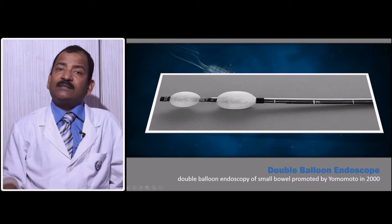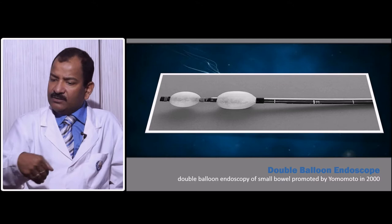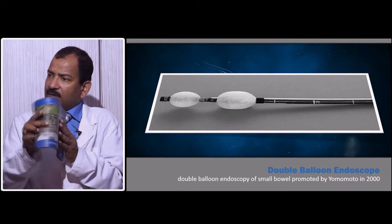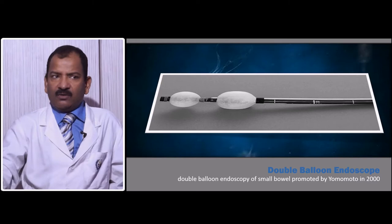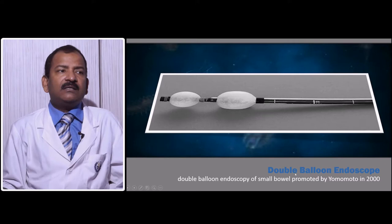Double balloon endoscopy is very good for seeing the terminal ileum, because in conventional endoscopy we can go only up to the second part of the duodenum. After the second part there is an acute bend, and if you try to push the endoscope there will be a looping effect — the loop is pushed but it will not go ahead. In those situations the double balloon endoscope was invented by Yamamato in the year 2000.